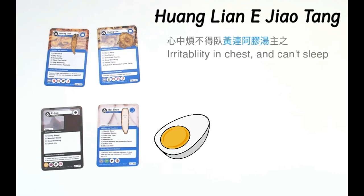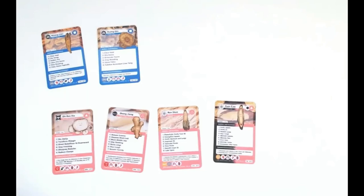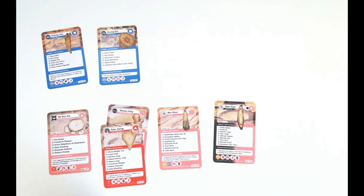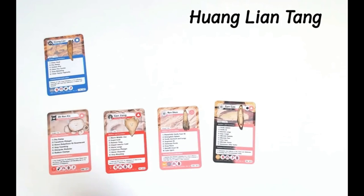Instead of Er Chao and Bai Shao, if you add Ban Sha, Shen Chang, Ren Sen, Gan Chao, and additional Gan Chao — that means Ban Sha Shintang. If you remove Huang Nian and add Chai Hu and remove Gan Chao — Xiao Chai Hu Tang. If you remove Chai Hu and also Huang Chin, and instead of Shen Chang add Gan Chao — this is Huang Nian Tang. I hope you liked the lecture. See you later.